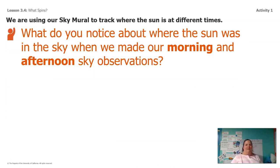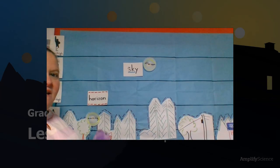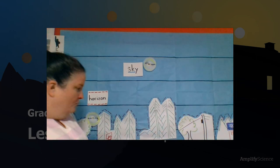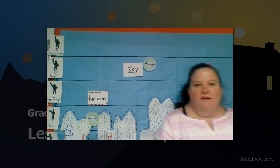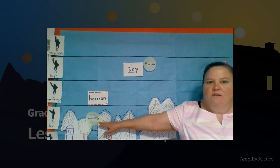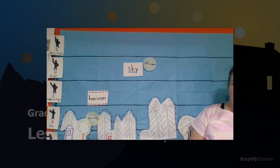Let's go ahead and look at our sky mural and see what we notice about where the sun was in the sky when we made our morning observations and where it was when we made our afternoon observations. When you guys are looking at our sky mural, what do you notice about where the sun was in the morning compared to where it was in the afternoon?